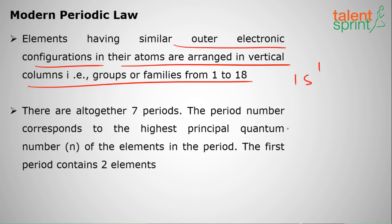Suppose if I say 1s1, and another has 2s1, the valence electron in both cases is 1, so they will be arranged in the similar vertical column.